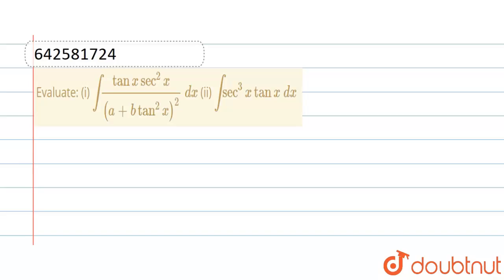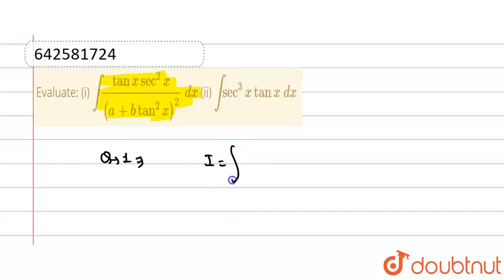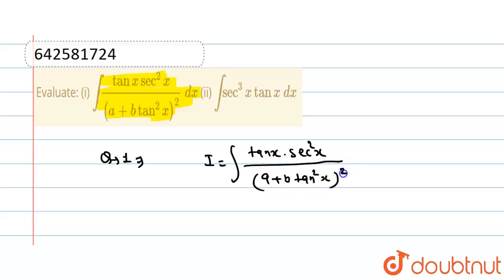Hello everyone, welcome to Doubtnut. Now the question is: I is equal to integration of tan(x) times sec²(x) upon (a + b·tan²x) whole squared, dx.